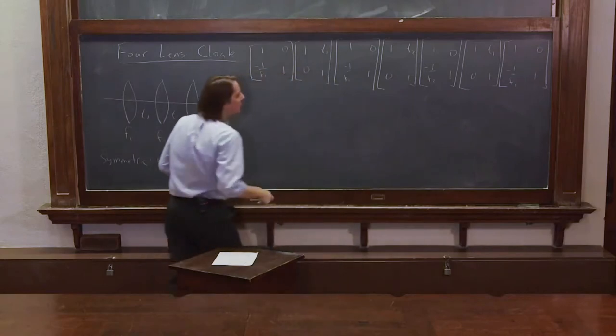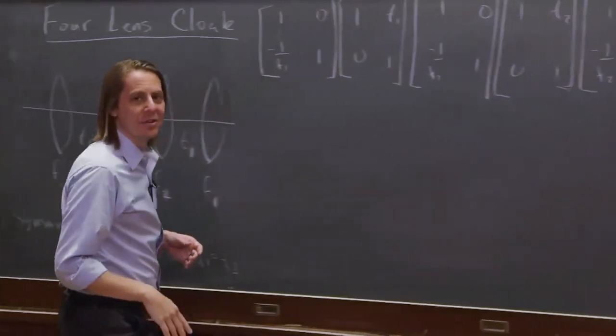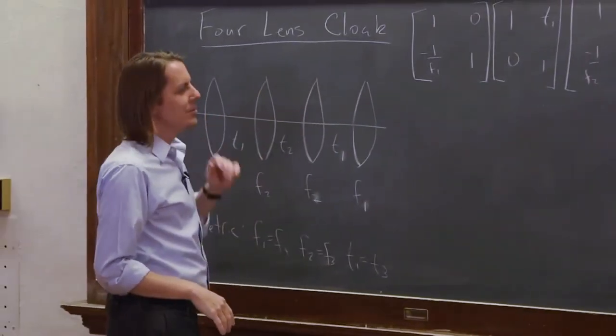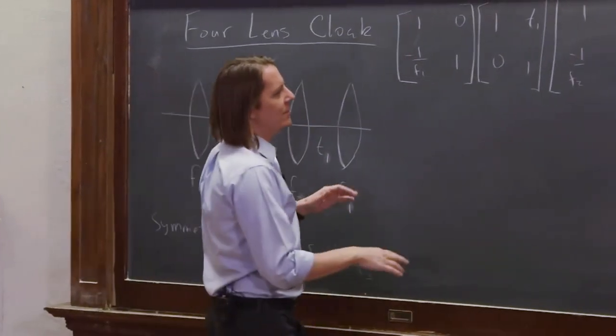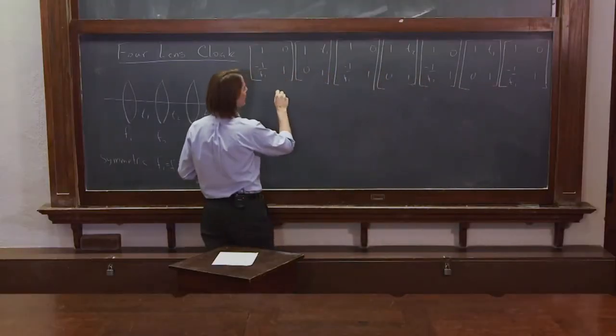So we're going to multiply all of these. Now if you really just go down, they'll get really complicated. So a little tip to making this not quite so bad is to keep the simple ones. Multiply them when they're simple. So let's multiply the two outside ones and see what happens here.